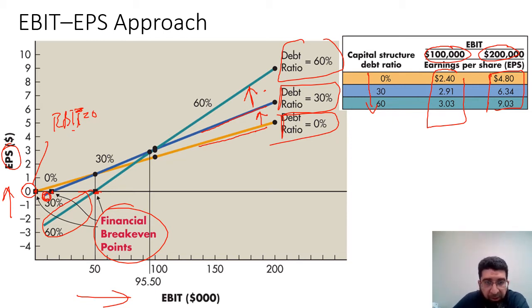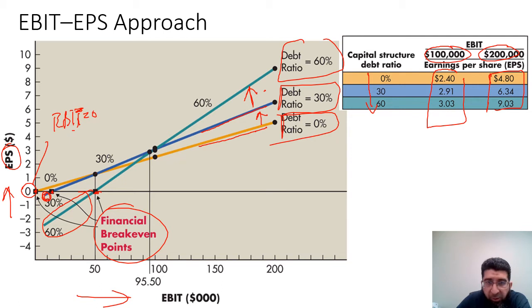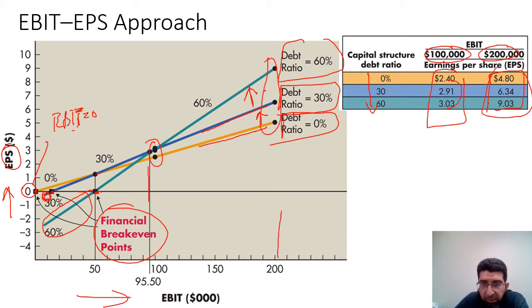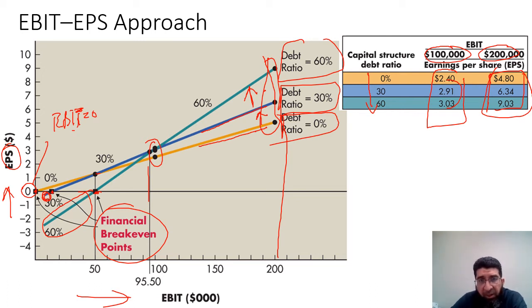At $100,000 EBIT you can see the value of 2.4 plotted here, and these are the points plotted at $200,000 EBIT. Obviously, the slope of the line and the position of these points both matter in interpreting the graph.